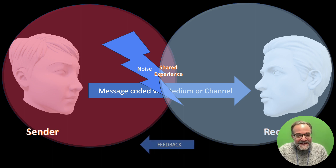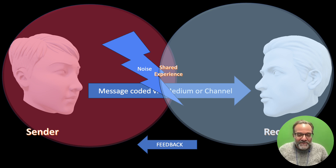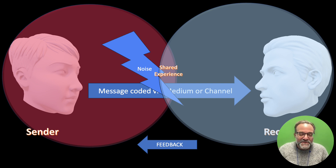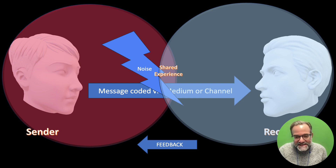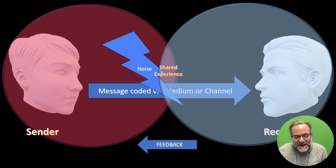The other thing is a feedback loop, where the receiver can send information back to the sender. Maybe it's a marketing campaign and sales go through the roof — that's positive feedback. Or you put up a new website and nobody visited it — that's negative feedback. We need to think about why we're getting negative feedback, how to maximize positive feedback, and minimize negative feedback. Sometimes that feedback can be delayed, depending on how long it takes for the message to travel.